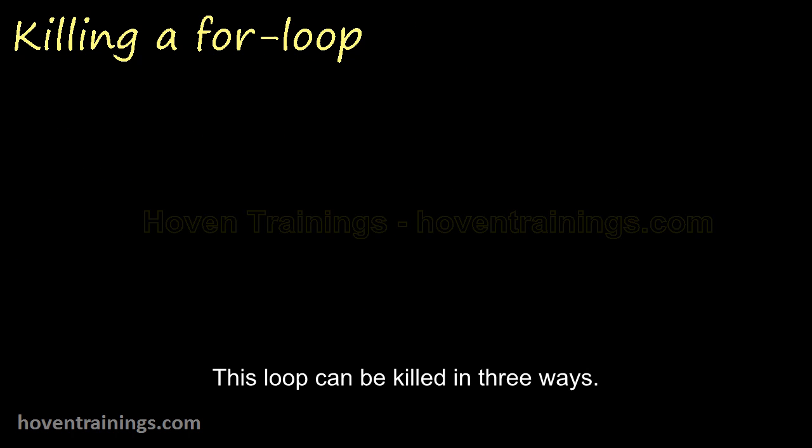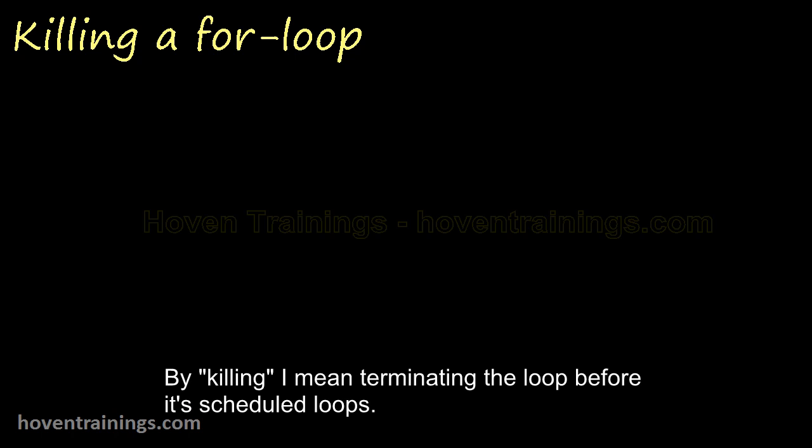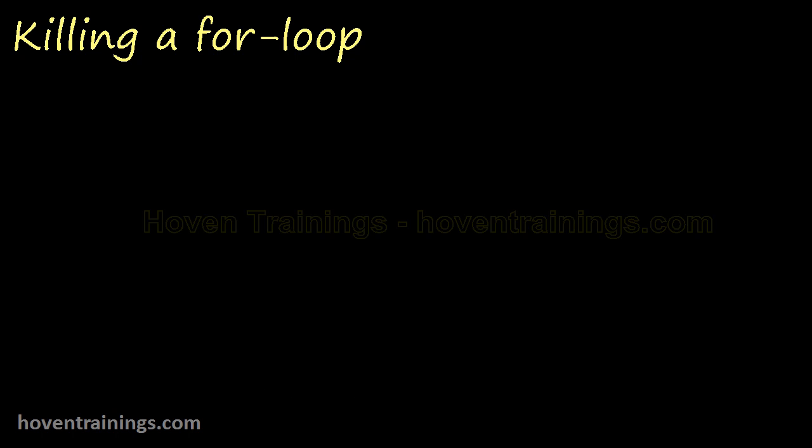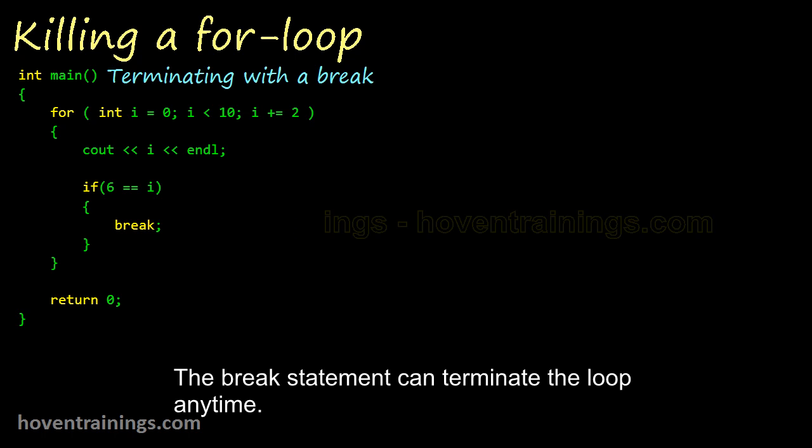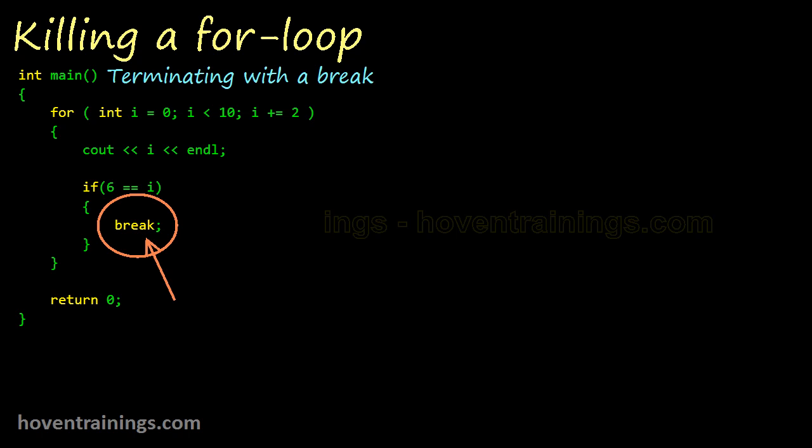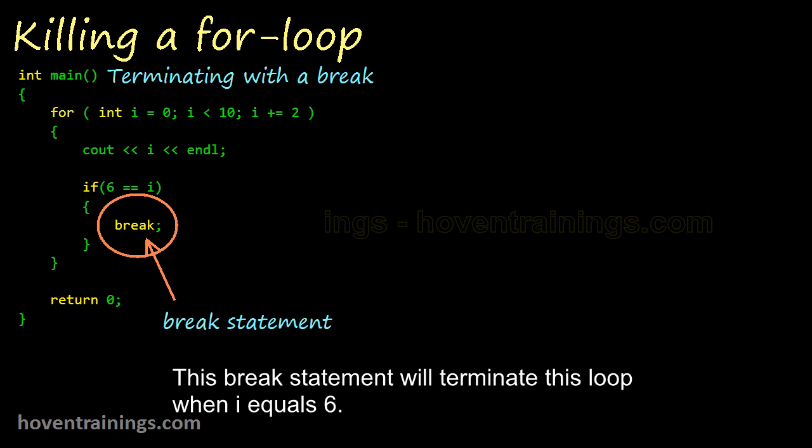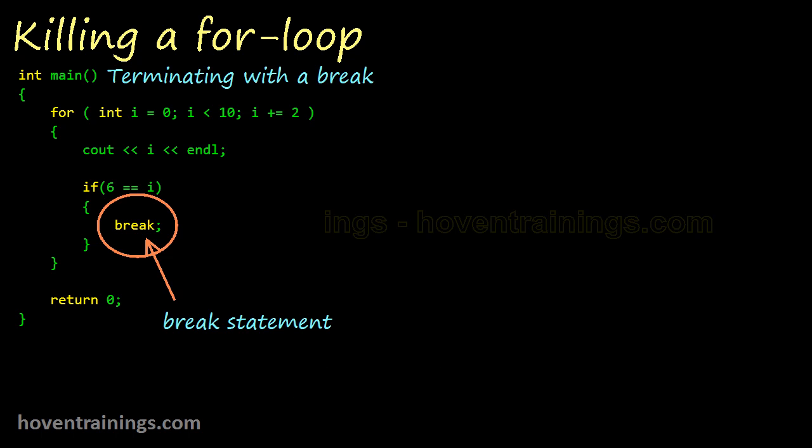This loop can be killed in three ways. By killing I mean terminating the loop before its scheduled loops. The break statement can terminate the loop anytime. This break statement will terminate this loop when I equals six. The control jumps to this place outside the loop.